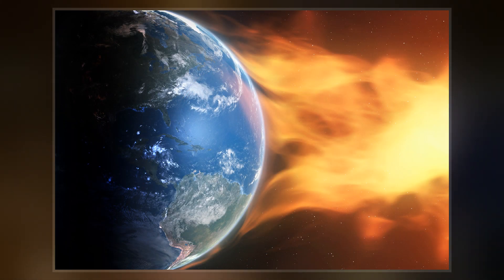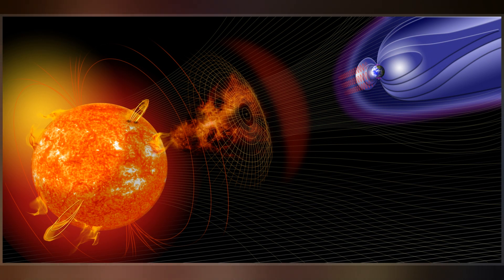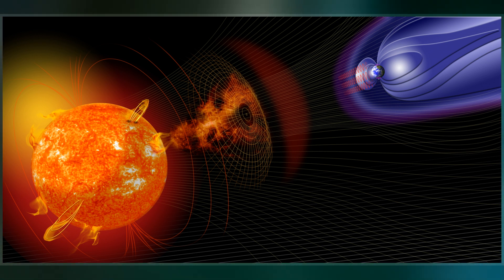The frequency of geomagnetic storms increases and decreases with the sunspot cycle. During solar maximum, geomagnetic storms occur more often, with the majority driven by CMEs.